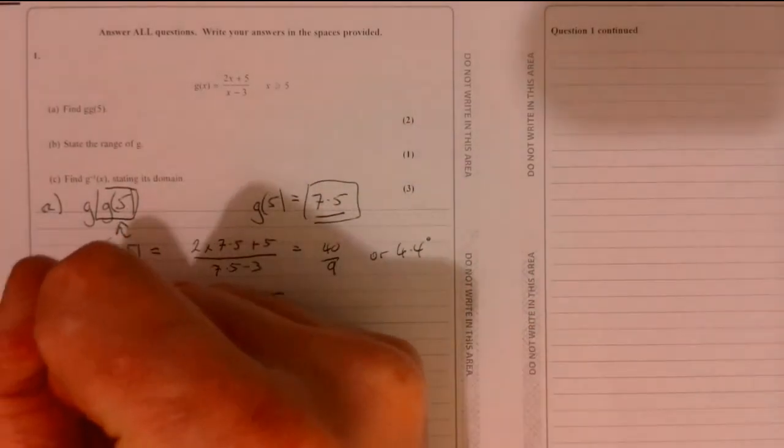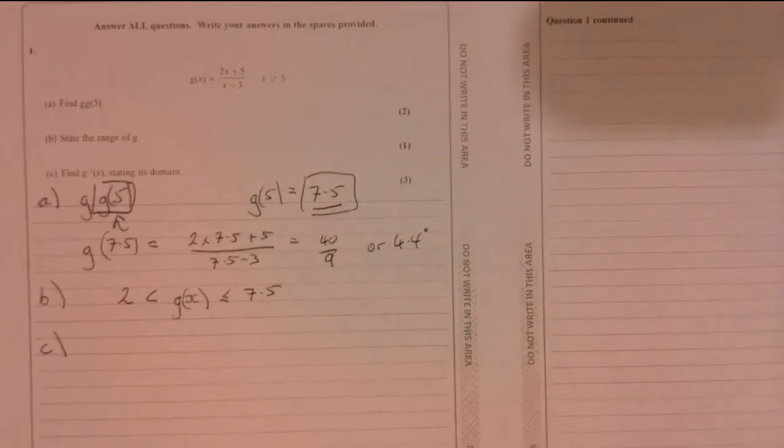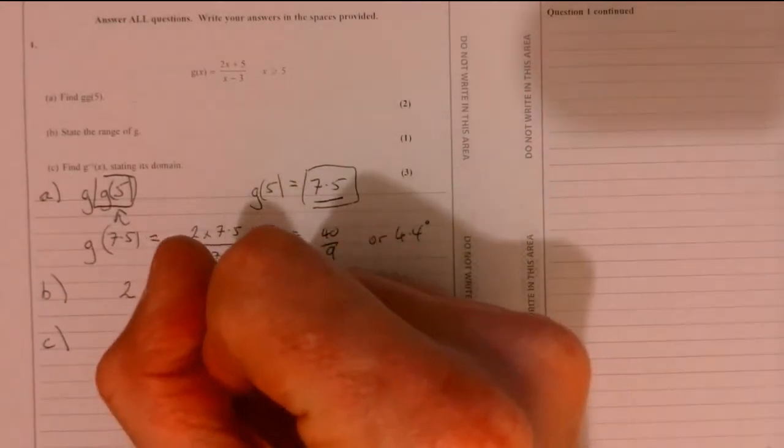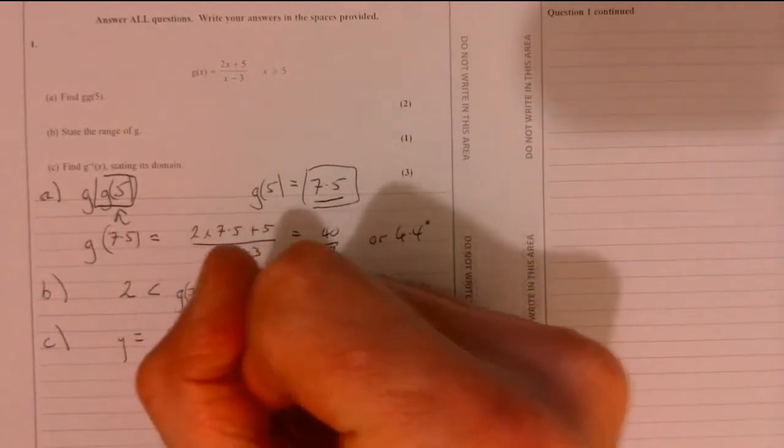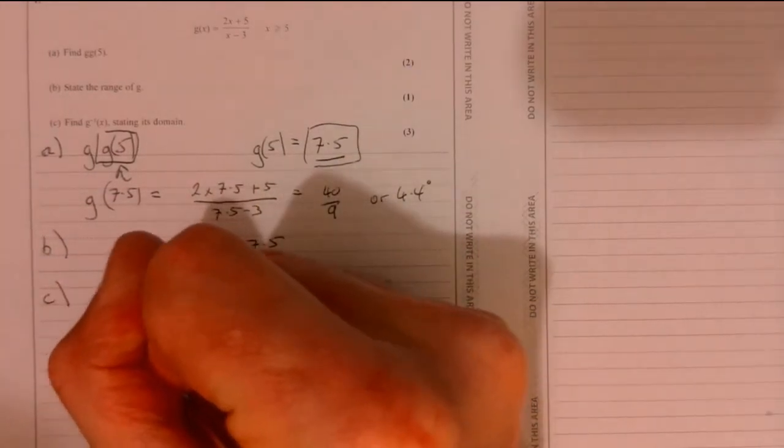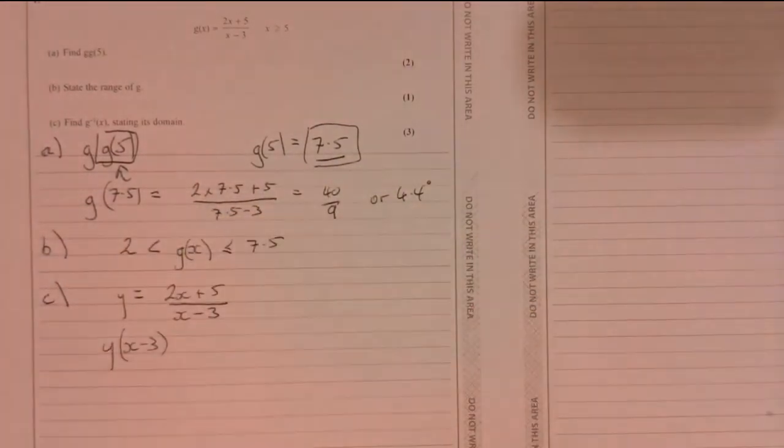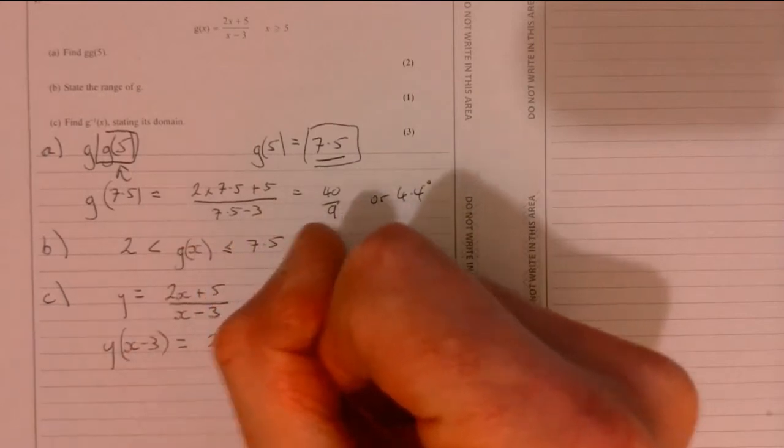Now, part C. Part C, first of all, we need to do the inverse. Now, when we do the inverse, remember, this is the easiest thing to do is just to say Y equals two X plus five over X minus three. And then we're just using Y as a vehicle to reverse this. So multiply both sides by X minus three. In other words, we're just trying to get X equals.